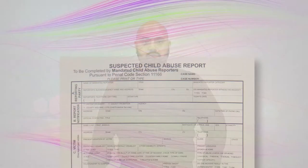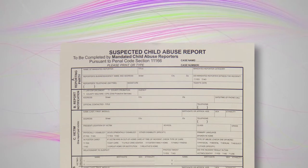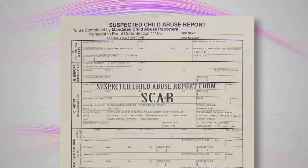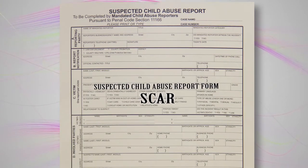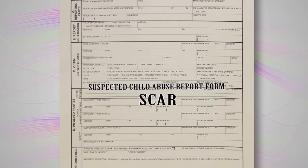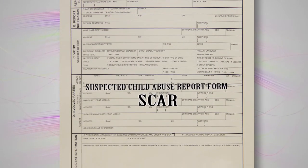Complete the Suspected Child Abuse Report, or SCAR form. Obtain the child's file and any information pertaining to the incident to complete the SCAR. Call the local Child Welfare Services Agency immediately. If you feel that the child is in impending danger, call 911 before contacting CWS.